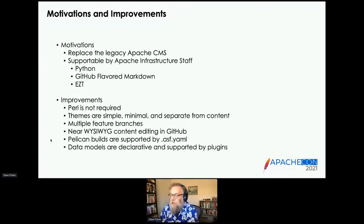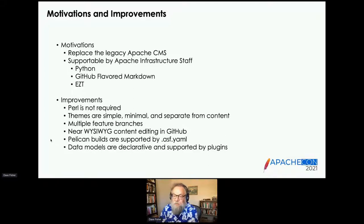For the improvements, no more Perl. We want to keep the themes simple and minimal and keep them separate from the content. One of the issues with the CMS was a redesign happening — the old system had two modes, staging and production. Everything that went to production had to go through staging. Someone was working on a redesign and someone else pressed the publish button, messing up the site. So one of our improvements is that you can have multiple feature branches, and they all stage as separate domains. We also have a new tool called ASF YAML, and we wanted to support Pelican builds from within that.